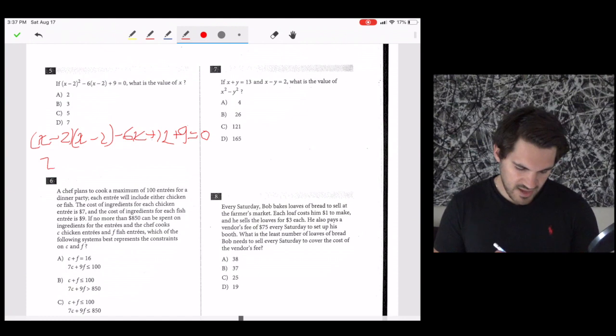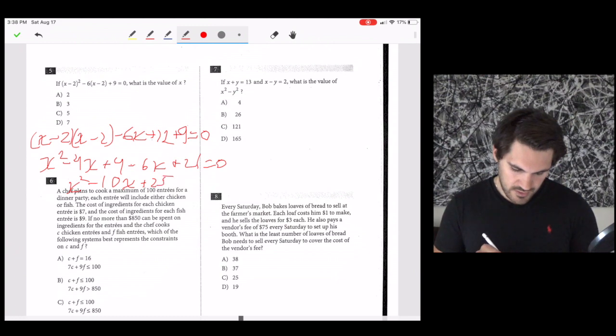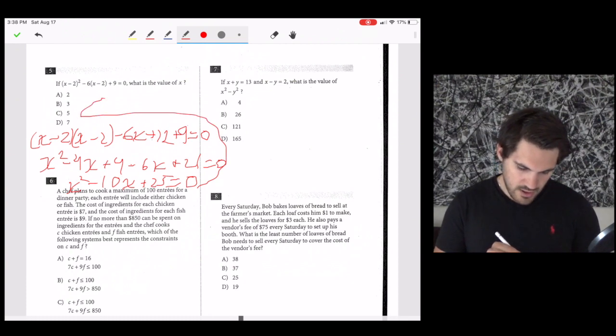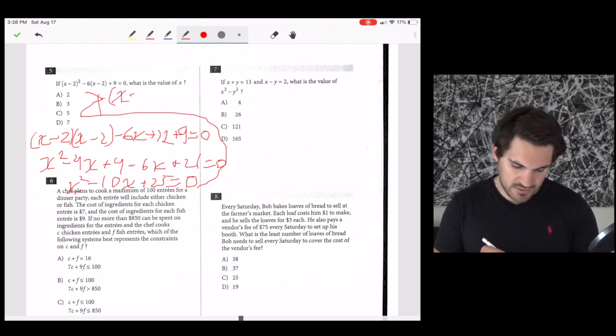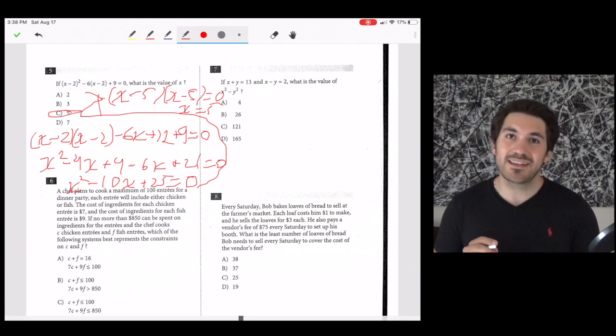so this will be minus 6x plus 12 plus 9 equals 0. This becomes x squared minus 4x plus 4 minus 6x plus 21 equals 0. Combine like terms, x squared minus 10x plus 25 equals 0. If we factor out x squared minus 10x plus 25, we're going to get x minus 5 times x minus 5 equals 0. So x equals 5. So c is our answer.